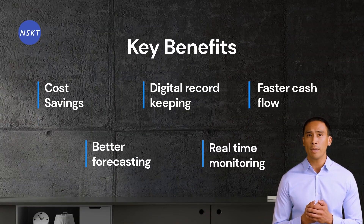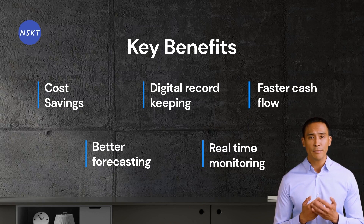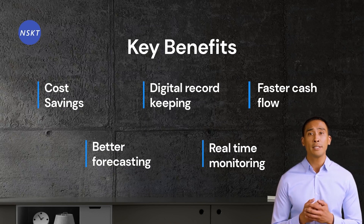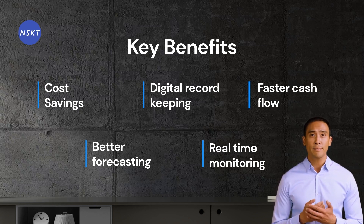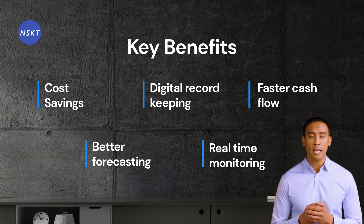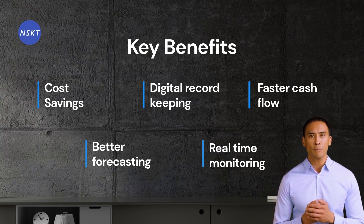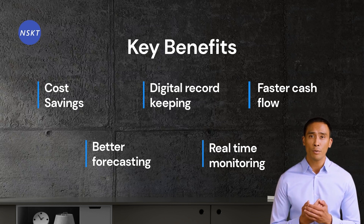Automating the accounts receivable and payable process can have a number of benefits, such as cost saving through better organization of credit. Using QuickBooks, all documentation such as invoices, credit notes, contracts, etc. are stored digitally on a secure network. Cash conversion is as per cycles defined in the system, therefore accurate and quick.